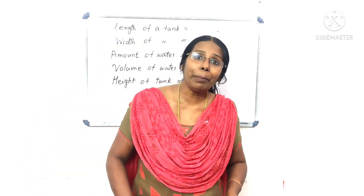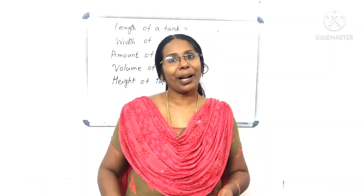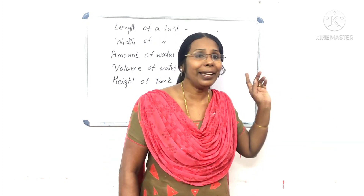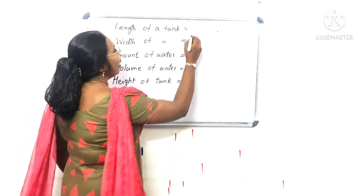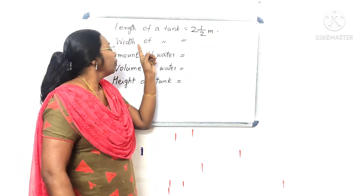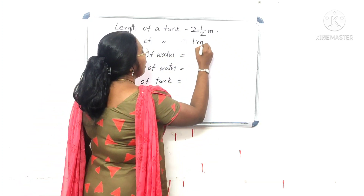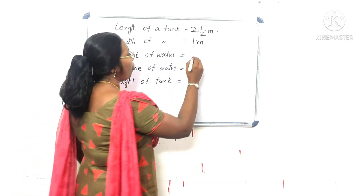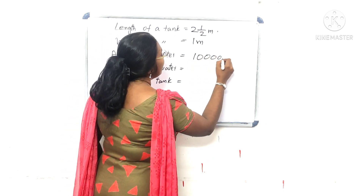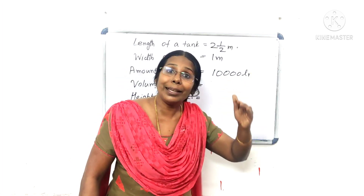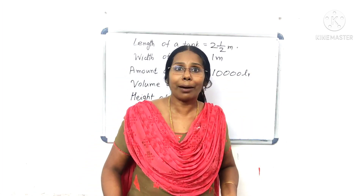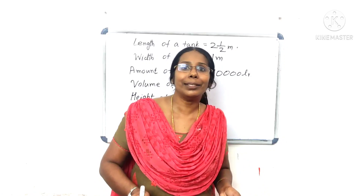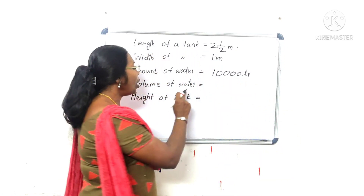Let's take a look. You can use a 2-metre tall large piece of metal, but the volume is about 10 litres. What is the length of the tank? 2 metres. What is the width of the tank? About 1 metre. What is the amount of water? The amount of water is 15 litres. It's about 15 litres — that's the volume of water.